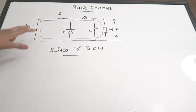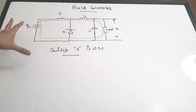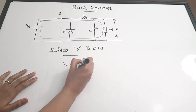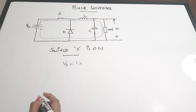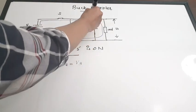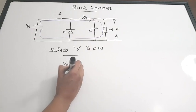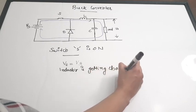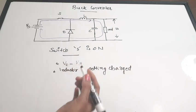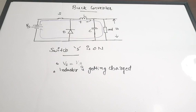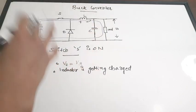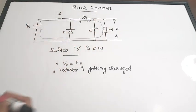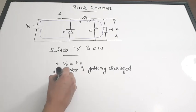When the switch is on, there is a connection between the supply and the load, so V_out equals V_s. The current passes through the inductor, which is getting charged, and its polarity will be positive-negative. The current flows through the load via the outer loop path. The current is not flowing through the diode, so the diode will not conduct when the switch is ON.